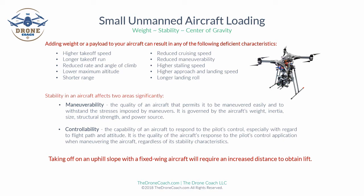Stability in an aircraft significantly affects two areas: maneuverability and controllability. Maneuverability is the quality of an aircraft that permits it to be maneuvered easily and to withstand the stresses imposed by the maneuvers — it is governed by the aircraft's weight, inertia, size, structural strength, and power source. Controllability is the capability of an aircraft to respond to the pilot's control, especially with regard to flight path and altitude. It is the quality of the aircraft's response to the pilot's control application when maneuvering the aircraft, regardless of its stability characteristics. Remember: taking off on an uphill slope with a fixed-wing aircraft will require an increased distance to obtain lift.